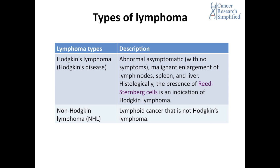There are two types of lymphomas: Hodgkin's lymphoma or Hodgkin's disease, and the other one is non-Hodgkin's lymphoma. We are focusing today on non-Hodgkin's lymphoma, NHL. NHL is a lymphoid cancer that is not Hodgkin's lymphoma. We have talked about Hodgkin's lymphoma in great detail in our Hodgkin's lymphoma episode.